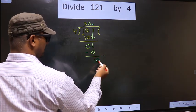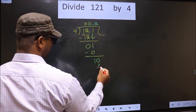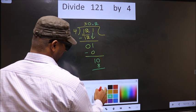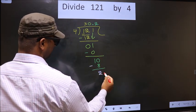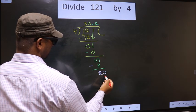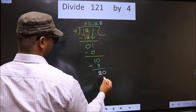Now here we have 10. A number close to 10 in the 4 table is 4 times 2 is 8. Now you subtract. 10 minus 8, 2. Now you take 0 here. When do we get 20 in the 4 table? 4 times 5 is 20.